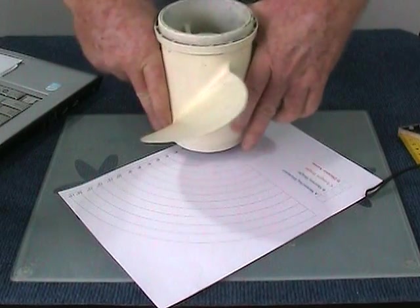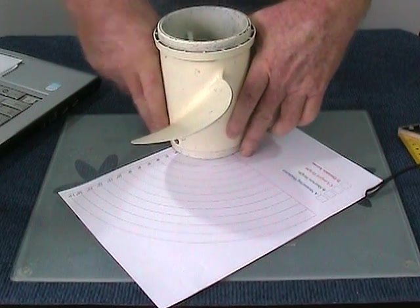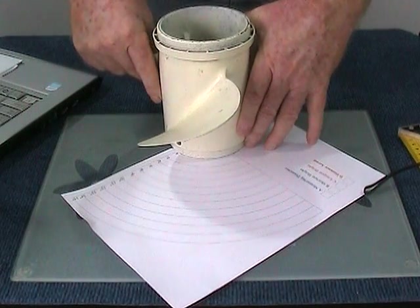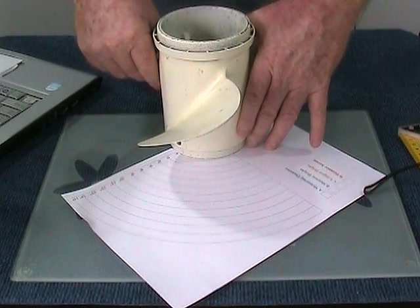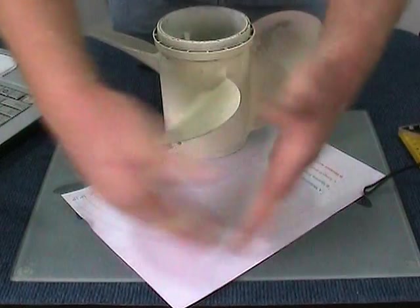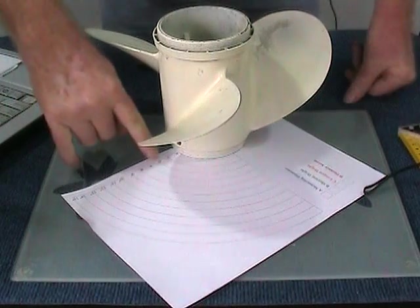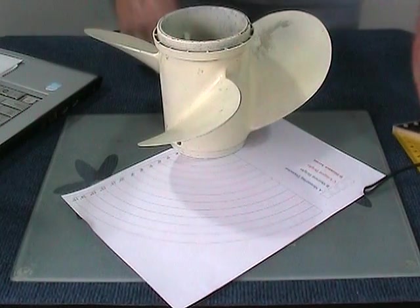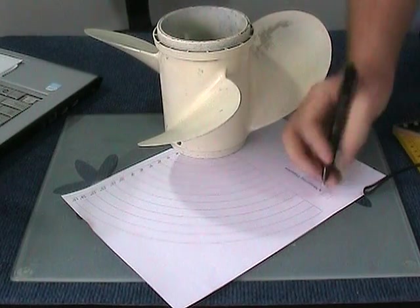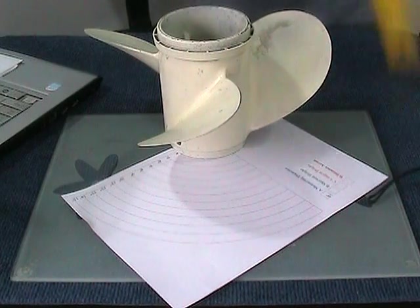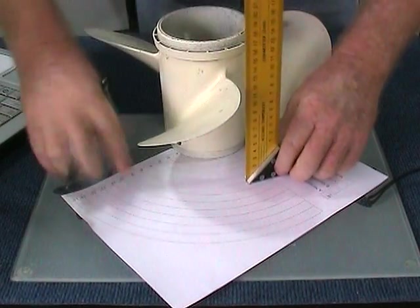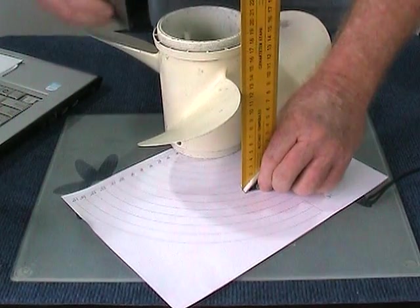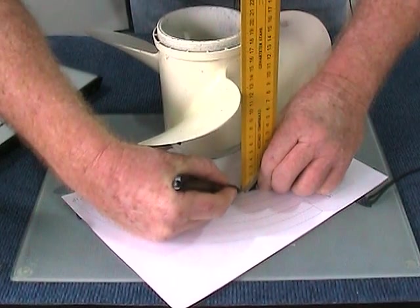So let's make sure this propeller is central on the template. Make sure the blade is over the arc. This is marked to 15 inch diameter and we're going to measure at 9 inch. So 9 inch is our measuring diameter. We're going to put that right-angle square on the 9 inch and we're going to put a mark just there.